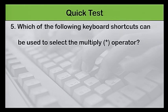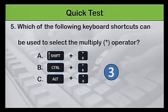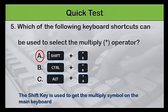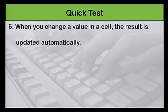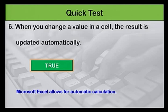Question 5: Which of the following keyboard shortcuts can be used to select the multiply operator? A — using the shift key, B — using the ctrl key, or C — using the alt key. The answer is A. The shift key is used to get the multiply symbol on the main keyboard. Question 6: When you change a value in a cell, the result is updated automatically — is it true or false? The answer is true, as Microsoft Excel allows for automatic calculation.